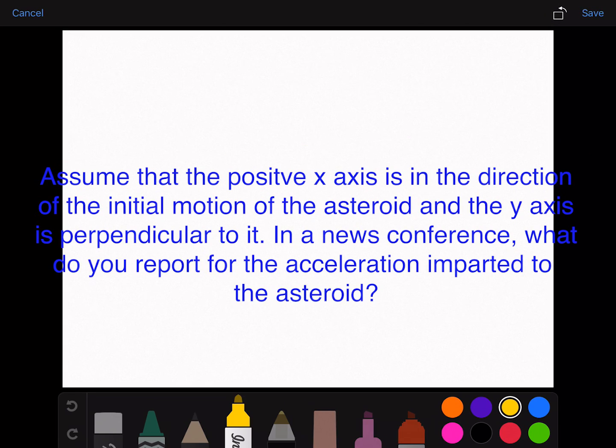Assume that the positive x-axis is in the direction of the initial motion of the asteroid and y-axis is perpendicular to it. In a news conference, what do you report for the acceleration imparted to the asteroid? Express your answer using two significant figures.